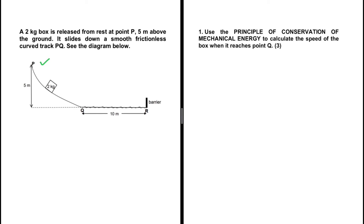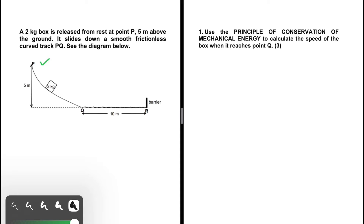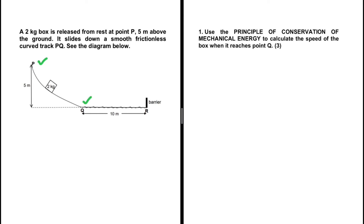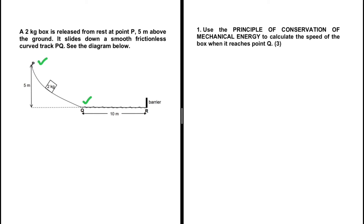The first question asks us to use the principle of conservation of mechanical energy to calculate the speed of the box when it reaches point Q. We are only interested in the motion from point P to point Q, and using conservation of mechanical energy simplifies the problem for us.